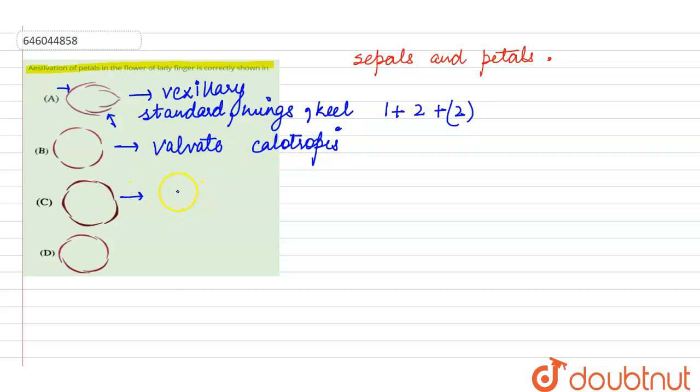The third type are the irregularly overlapped petals. There is irregular overlapping that occurs in case of Cassia and Gulmohar. Some of the petals are not overlapped on both ends.